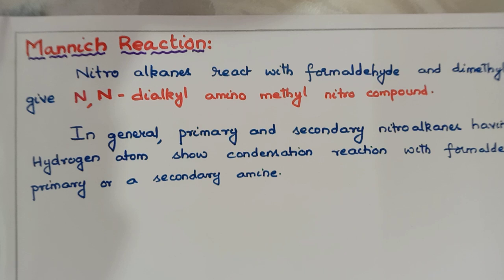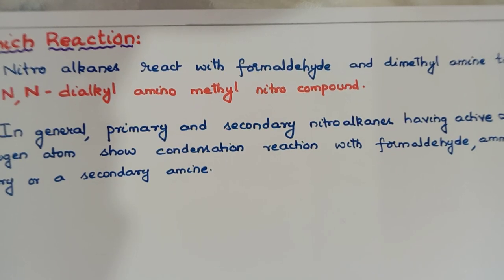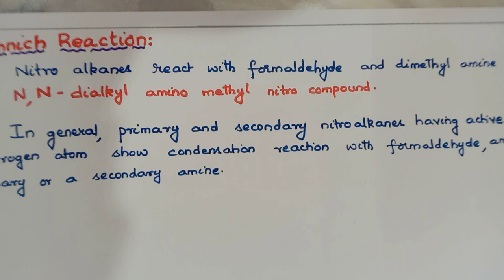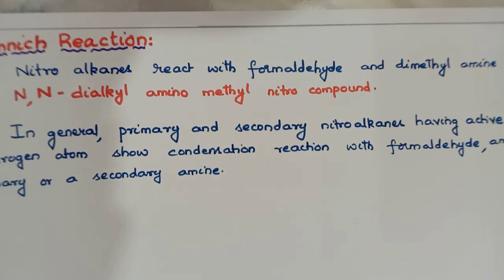So what is this Mannich reaction? The Mannich reaction is the reaction in which nitroalkanes react with formaldehyde and dimethylamine — dimethylamine being a secondary amine — and form N,N-dialkylaminomethyl nitro compound, which is the product being formed in the Mannich reaction.